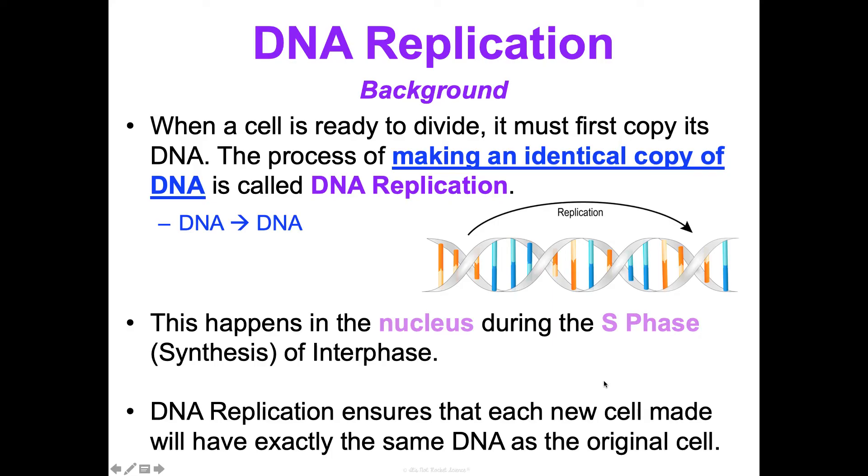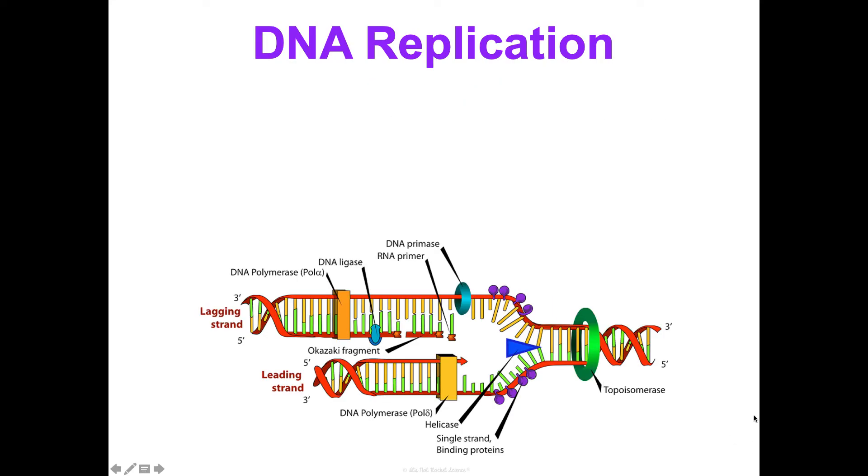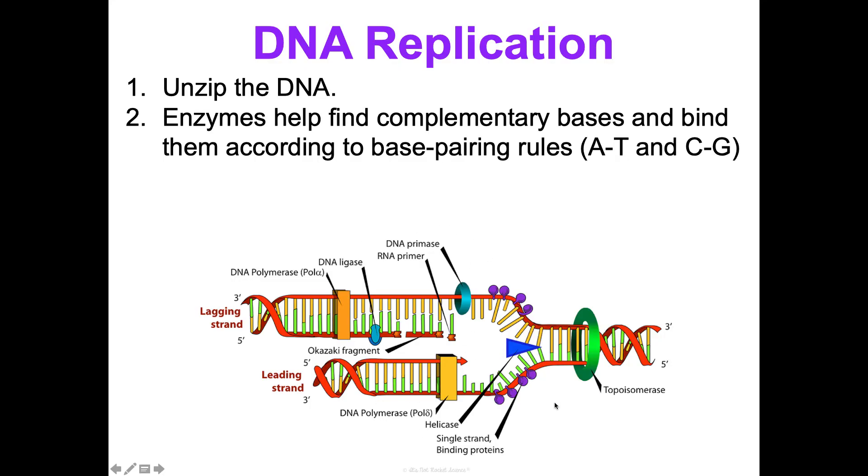Let's talk about what the actual process is. I'm going to summarize it into three basic steps. First, the DNA gets unzipped and all of this is happening by a bunch of different enzymes. Then those enzymes - well, some different ones - but they help find the complementary bases and bind them according to base pairing rules. They find the A's and they bring T's to them, to the T's they bring A's, and then they get the C's and G's together.